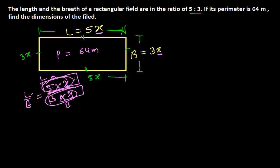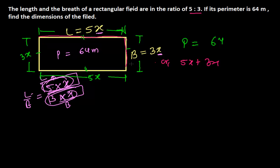According to the question, the perimeter is 64. We know the perimeter is the sum of all sides. So we have: 5X plus 5X plus 3X plus 3X equals 64.